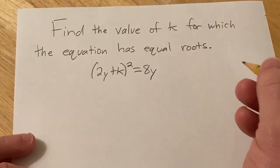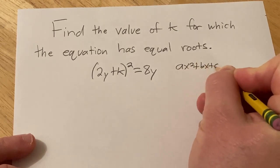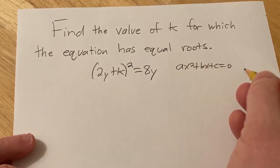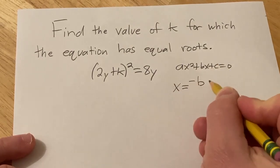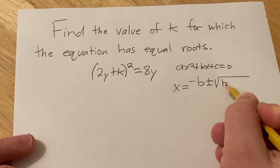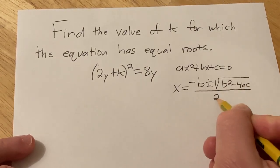If you have a quadratic equation of the form ax² + bx + c = 0, where a is not 0, then the solutions are given by x = (-b ± √(b² - 4ac)) / 2a.